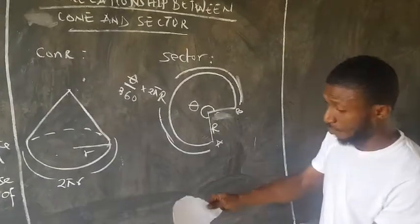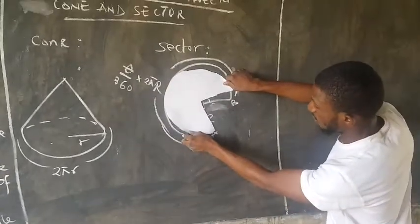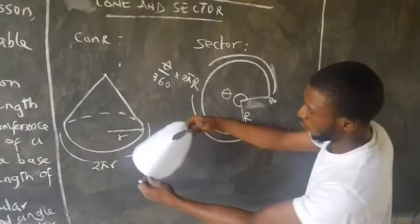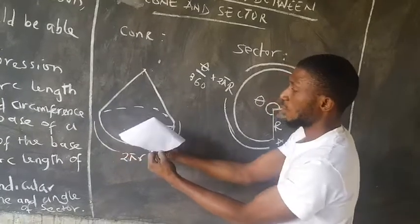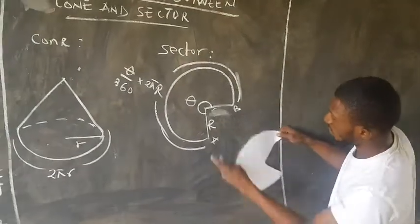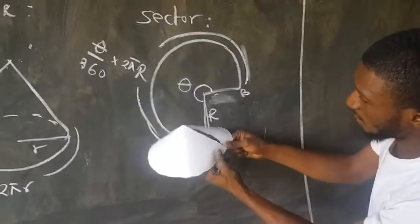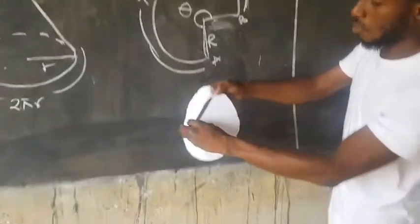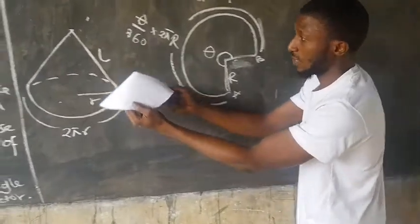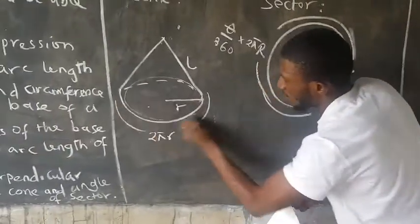This is a typical example of a cut-out cardboard of a sector. If you look at it, you see this is a sector. But if you use this edge to touch the other edge, you have what we know as a cone. The radius of this sector, when you use it to touch the other side, becomes the slant height L of the cone. And this base is going to form a circular base.